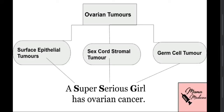Ovarian tumors are mainly divided into three types: surface epithelial tumors arising from the surface epithelium of the follicle; sex cord stromal tumors; and germ cell tumors that may arise from the theca cells, granulosa cells, or fibroblasts present inside the follicle.